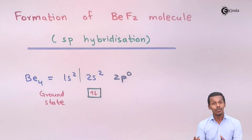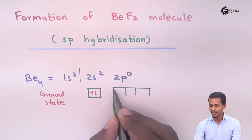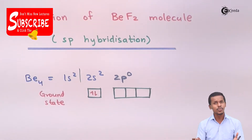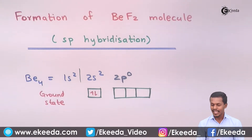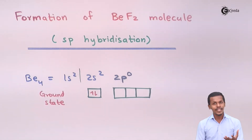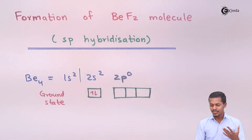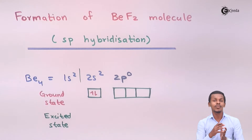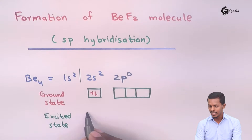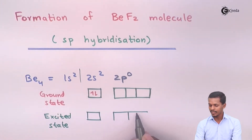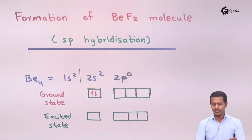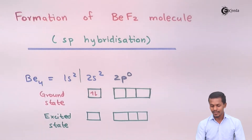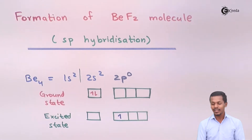The p subshell consists of empty orbitals. If we excite the electron by providing a particular energy, one of the electrons in the 2s orbital will shift toward the 2p orbital. This orbital will remain the same; only the number of electrons changes due to excitation. One electron will move toward the px orbital and one electron will remain in the s orbital.